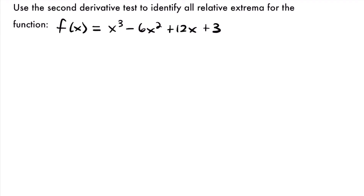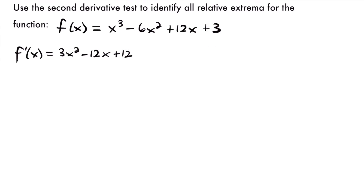Let's find those critical values. f'(x) = 3x² - 12x + 12. Using the power rule for each term: the derivative gives us 3x², then 2 times -6 gives -12x, and then the derivative of 12x is just 12, and the derivative of the constant 3 is zero. So now let's set this equal to zero and solve for our critical values.